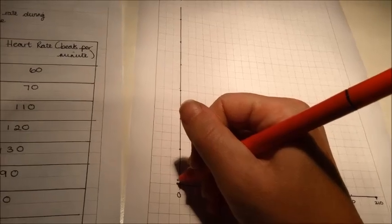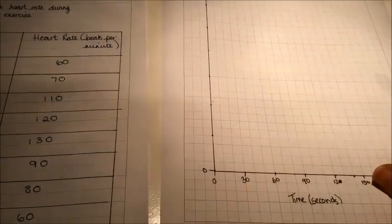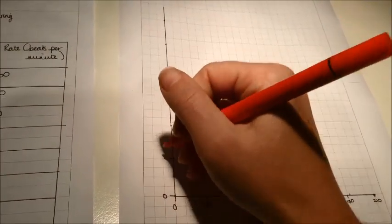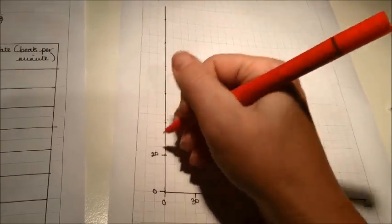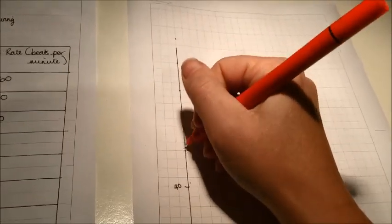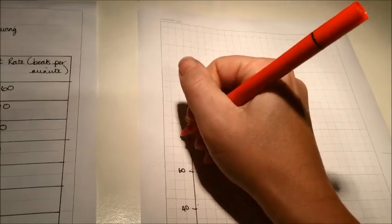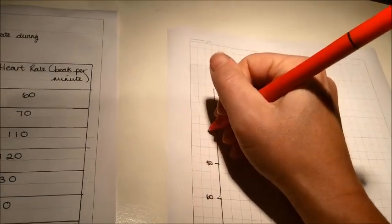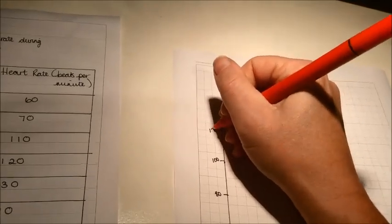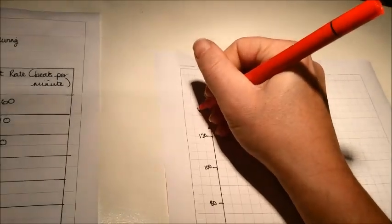So let's put in our zero at the bottom. And again, you need to get the numbers on the grid lines. You can't write them in the boxes, it must be on the grid lines. Let's go up four squares and that's going to be 20, 40, 60, 80, 100, 120. And up here, 140.